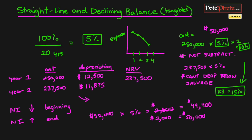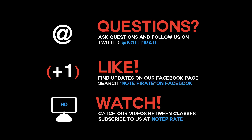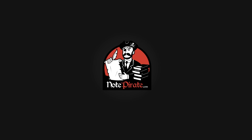The choice between straight-line and declining balance comes down to how you're using the asset. If you're using most of the asset's value at the beginning, use the declining balance method. If usage is constant throughout the asset's life, use the straight-line method. Hopefully that was clear — if you have questions, leave them in the comments. You can also tweet us at Note Pirate or like us on Facebook. Thanks for watching!